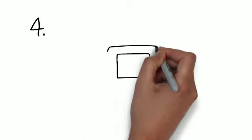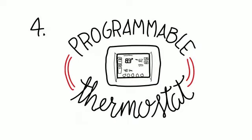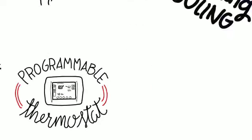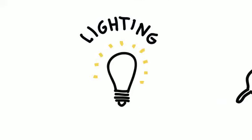Programmable thermostats are also a good way to regulate the temperature of your home as the outside temperature varies throughout the day. Inside your home, lighting can have a huge effect on your overall energy bill.